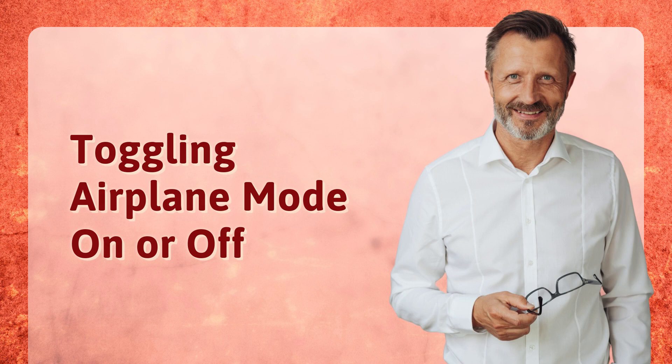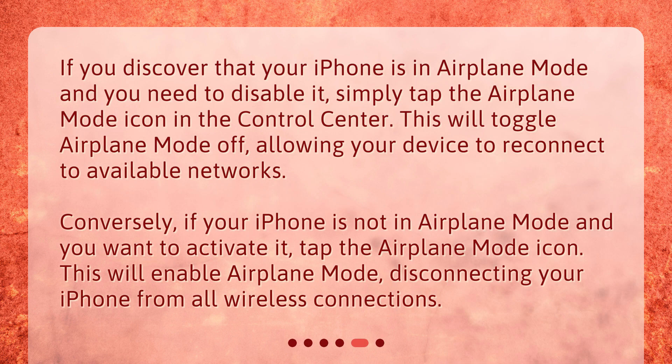Toggling Airplane Mode On or Off. If you discover that your iPhone is in airplane mode and you need to disable it, simply tap the airplane mode icon in the Control Center. This will toggle airplane mode off, allowing your device to reconnect to available networks. Conversely, if your iPhone is not in airplane mode and you want to activate it, tap the airplane mode icon. This will enable airplane mode, disconnecting your iPhone from all wireless connections.